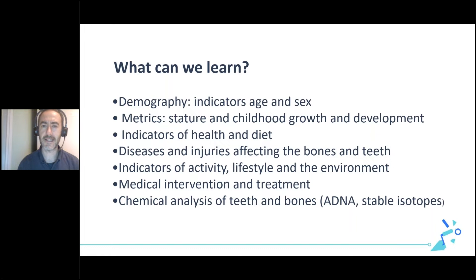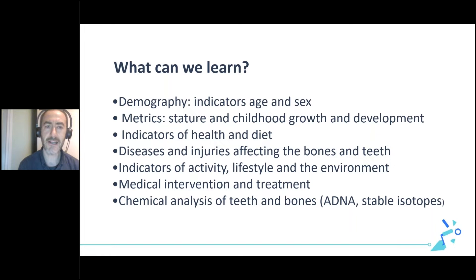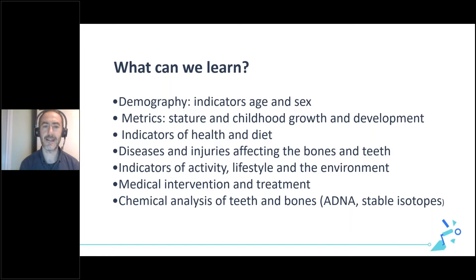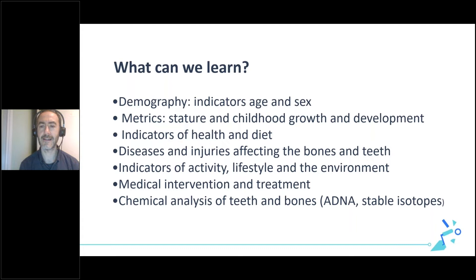Some of the key things we try to identify when we examine a skeleton are the demography — how old someone was when they died and if they were male or female. We can take measurements of bones to give an indication of living height, childhood growth rates, and development. We can look at bones for clues regarding health, the foods they may have eaten, and evidence of diseases and injuries. We can also take chemical analysis such as ancient DNA or stable isotopes to further understand who these people were and how they lived.